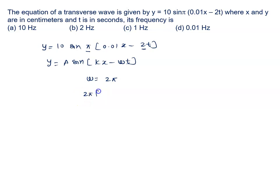Frequency is written as 2pi into frequency. That is 2pi. 2pi is the 2pi cancel. Frequency is 1. The answer of this problem is option C, 1 Hz.